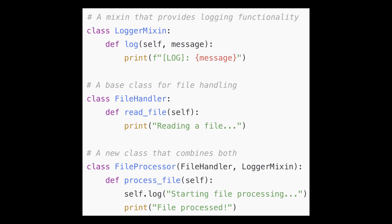A code example would make this a lot easier to understand. Imagine you have a class that processes files and you want to add logging so you can track what's happening. Instead of baking that logging code directly into your file processor, you can use a Mixin to keep things clean and modular.